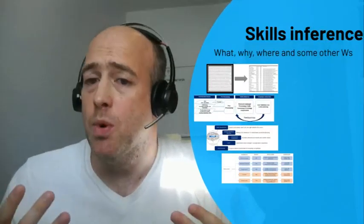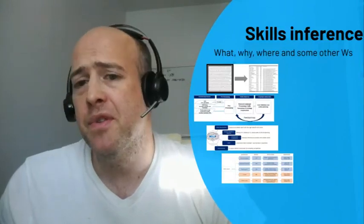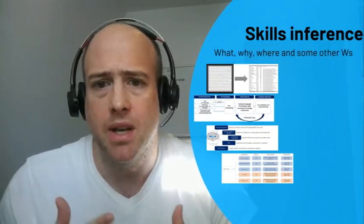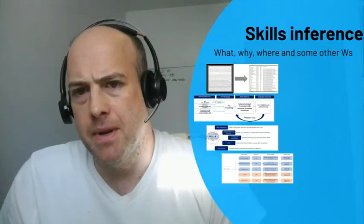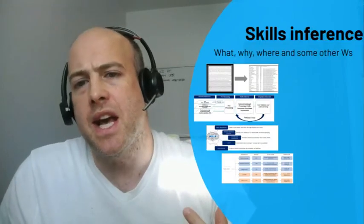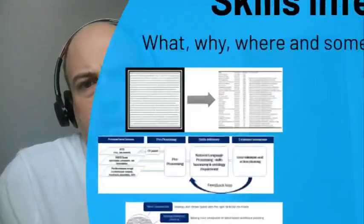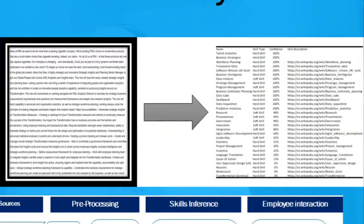This is where skills inference comes in. Skills inference essentially takes data that we have lying around all over our HR systems and runs natural language processing algorithms through it to understand what skills people actually have. To give you an example, I've pulled a job description for a people analytics role and thrown it through an open source skills inference API — this one is from EMSI, completely free to use. You just sign up, put a job description through their tool, and out come all the different skills on the other side.